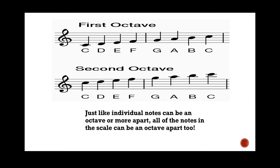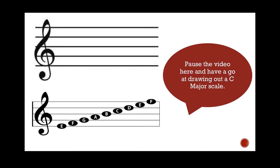Just like individual notes can be an octave apart, like both of the C notes from the previous slide, all of the notes in the scale can be an octave or more apart too. So you can play the same scale in a lower or higher octave. The first octave shown in this picture is lower down on the stave, so it will be lower in pitch than the second octave, which will have the same notes but at a higher pitch. Pause the video here and have a go at drawing out a C major scale by yourself — I've included the notes in the stave below to help you out. When you're ready to move on, press play.